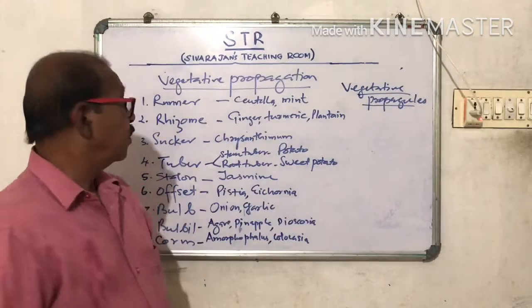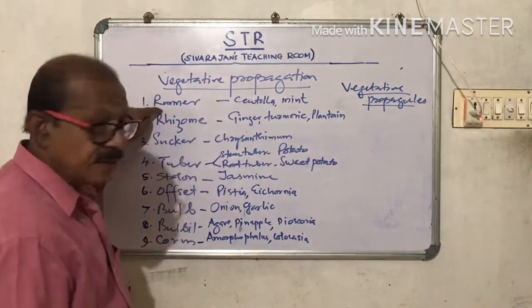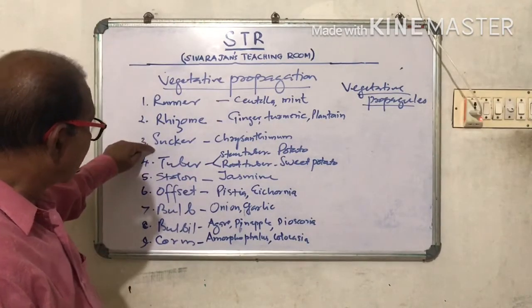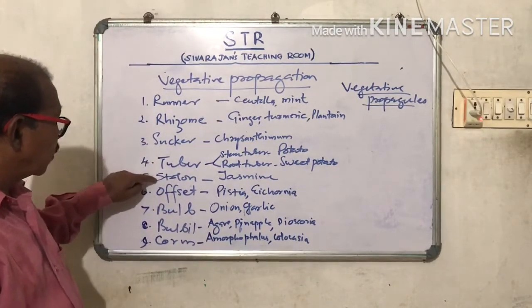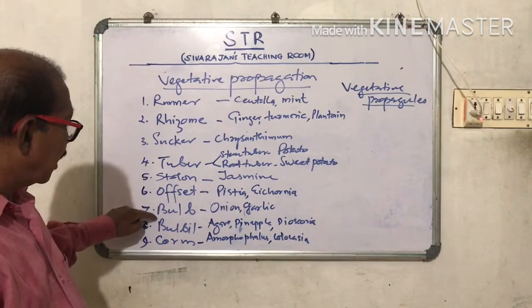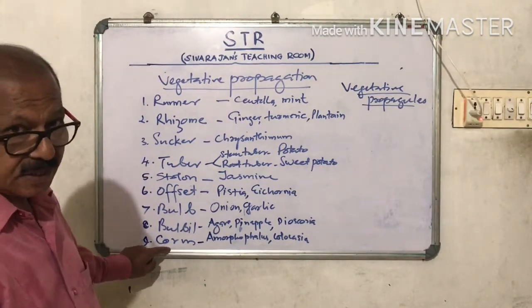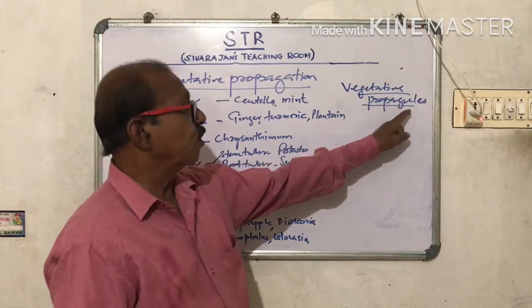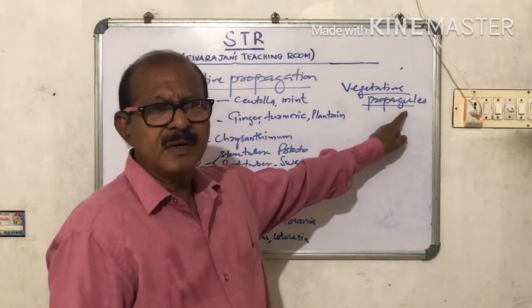So these are Vegetative Propagules: Runner, Rhizome, Sucker, Tuber, Stolon, Offset, Bulb, Bulbil, Corm, etc. are the different types of Vegetative Propagules.